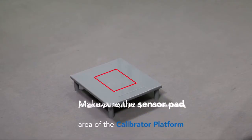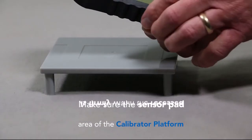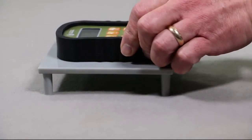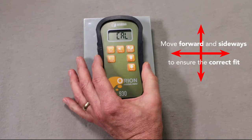Place the meter sensor pad directly within the recessed area of the calibrator platform. It is important that you move the meter in all directions to ensure that the sensor pad is firmly seated inside the recessed area.